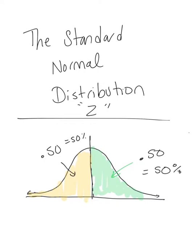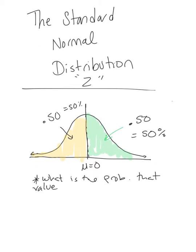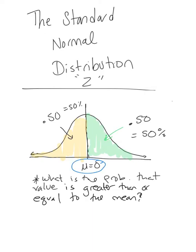If we imagine this distribution with the mean in the center — the mean being zero standard deviations from the mean — what we know is that if we're interested in finding the probability that a random continuous variable in this distribution is greater than or equal to the mean, that's the 50 percent or 0.5 area greater than the mean.